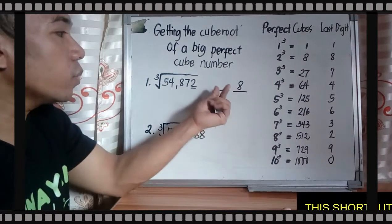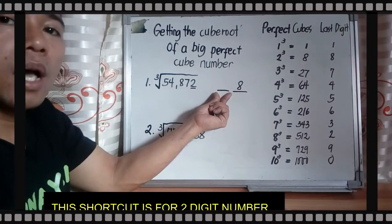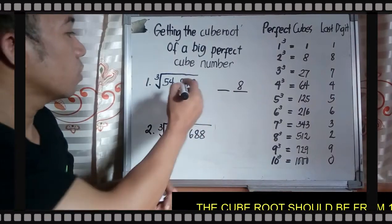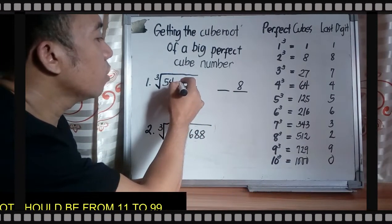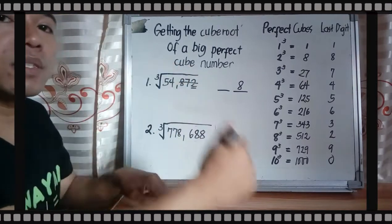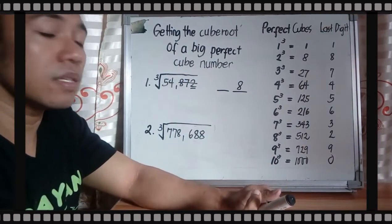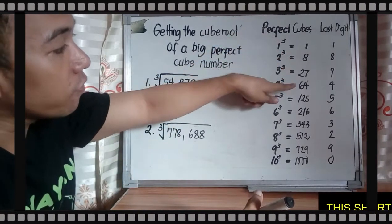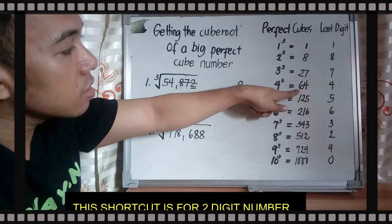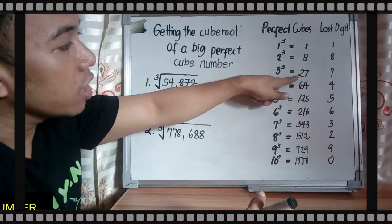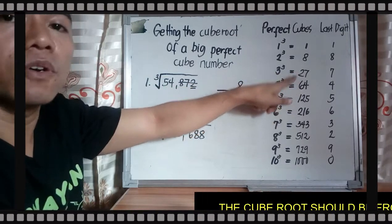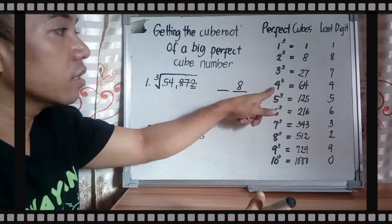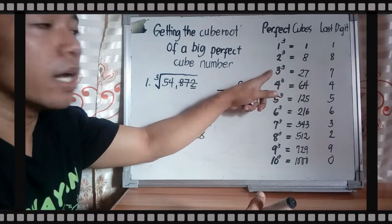And then what will be your tens digit for your cube root? Ignore or disregard the last three digits, so you will just use 54. So 54 is between 27 and 64.